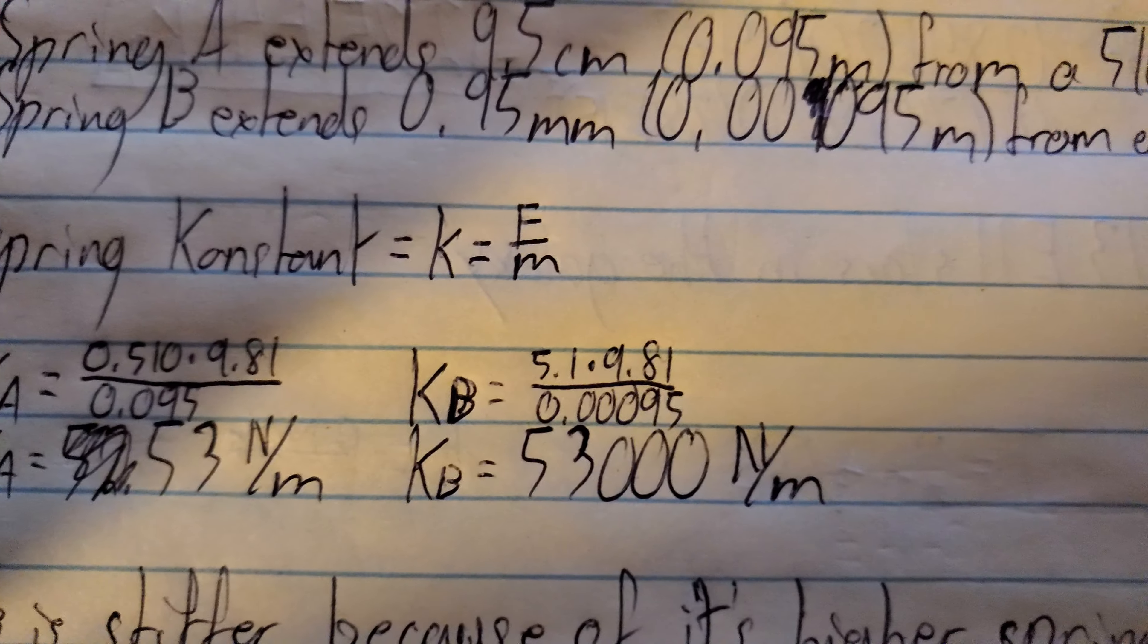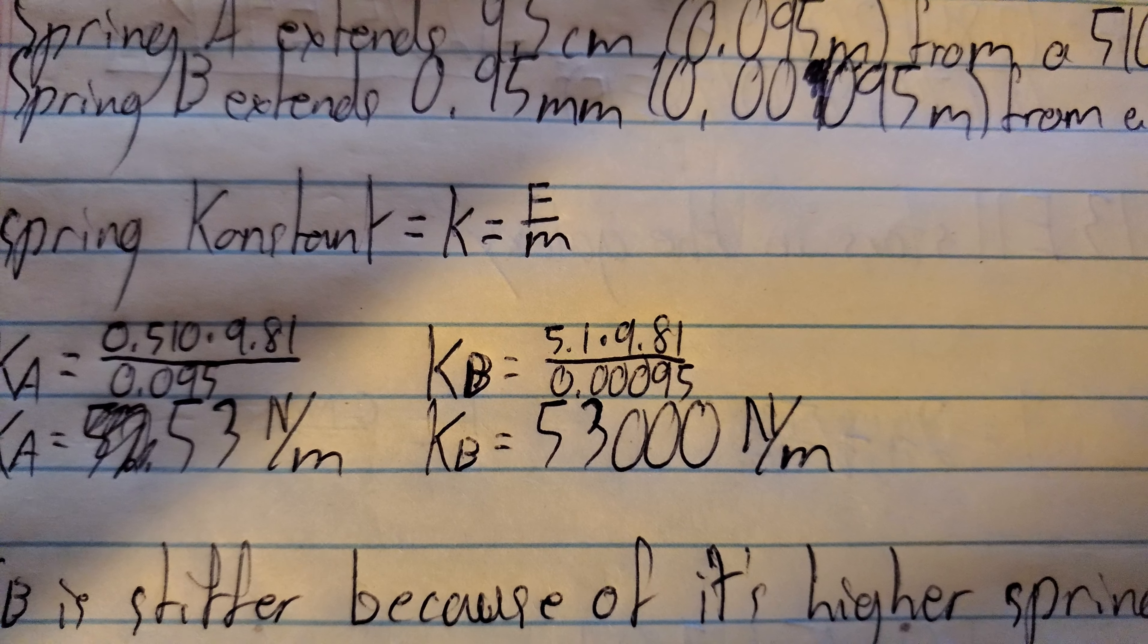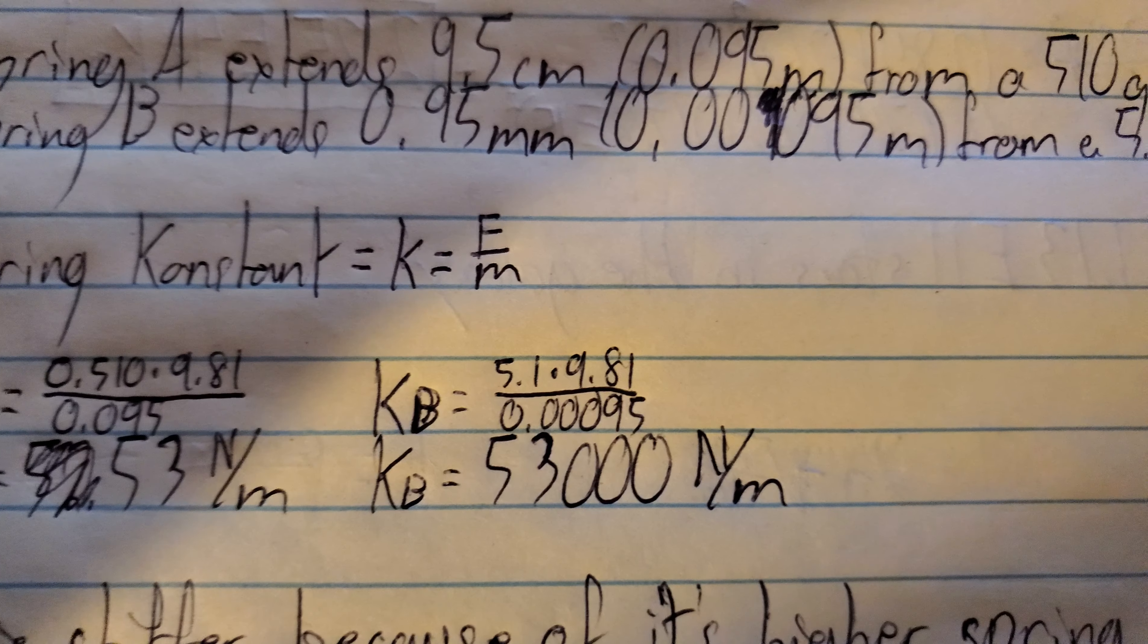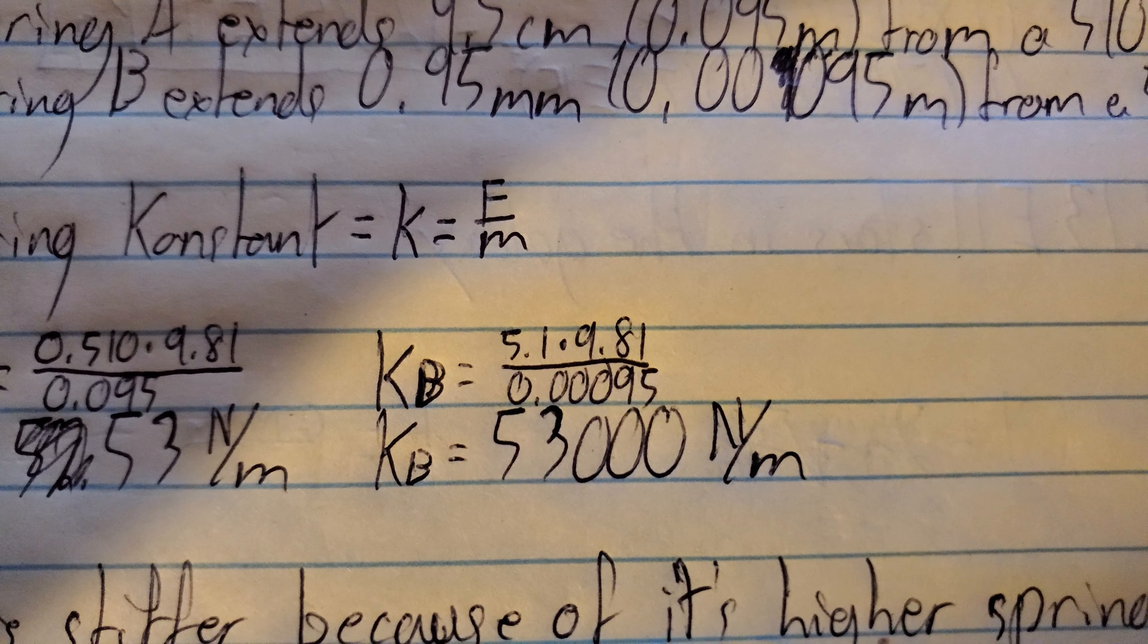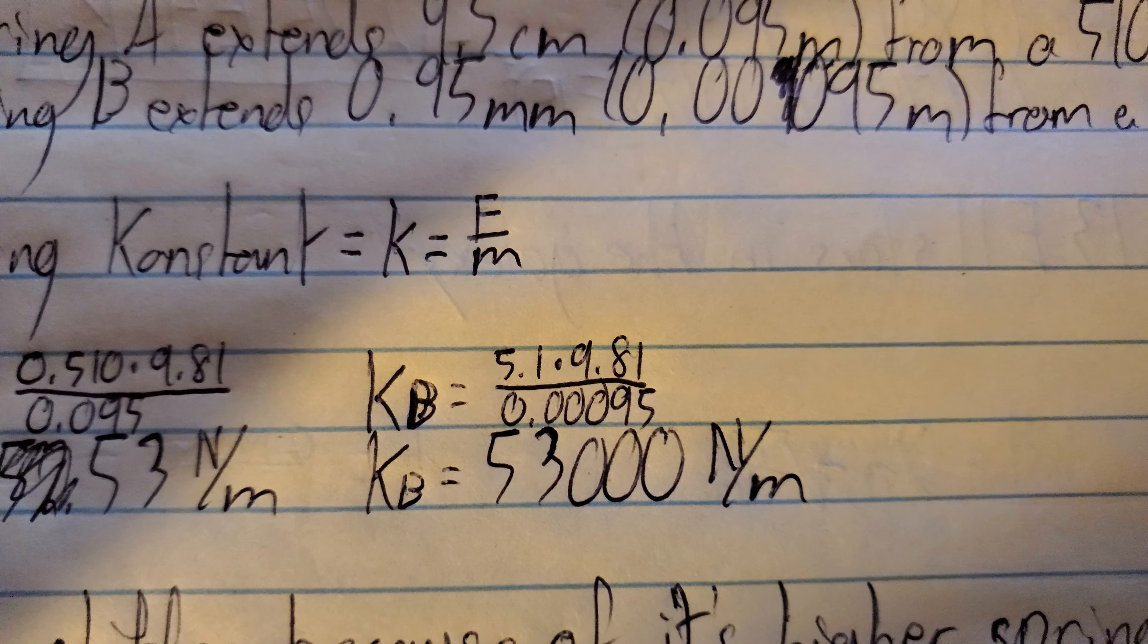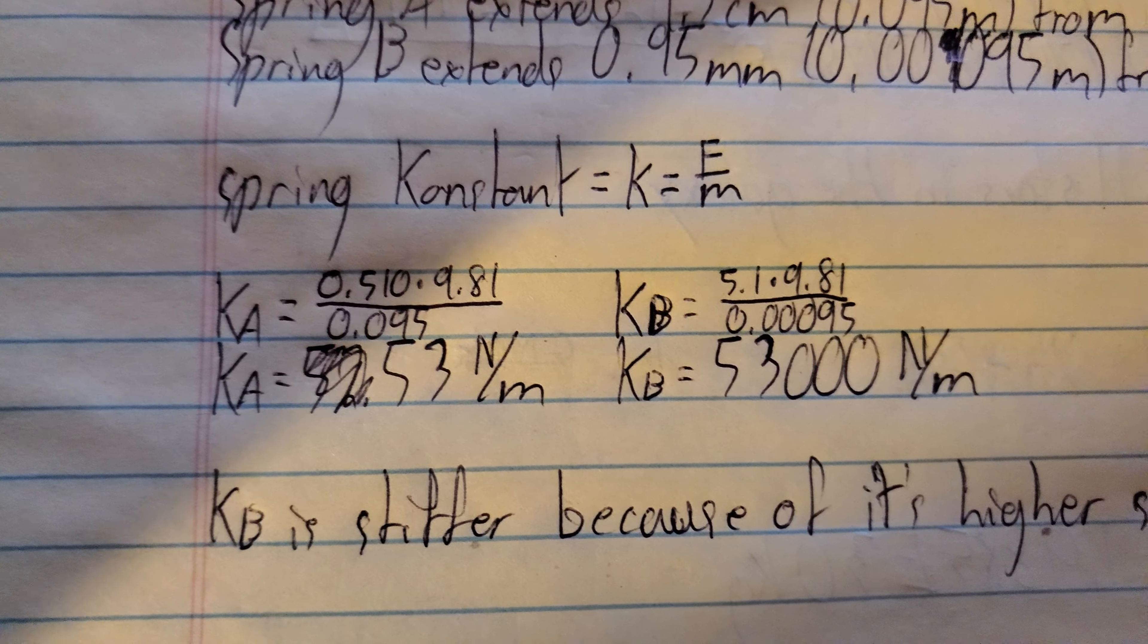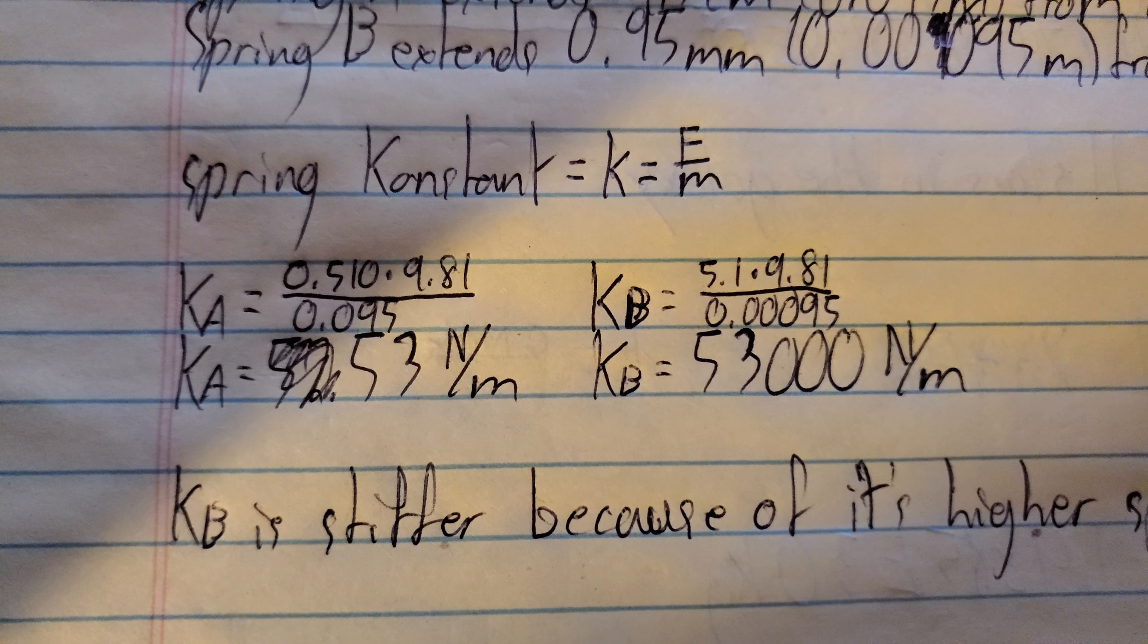And K sub B is looking very similar. It's 5.1 instead of 0.51, times 9.81 over 0.00095. So we can see already that K sub B is going to be about a thousand times as big as K sub A.